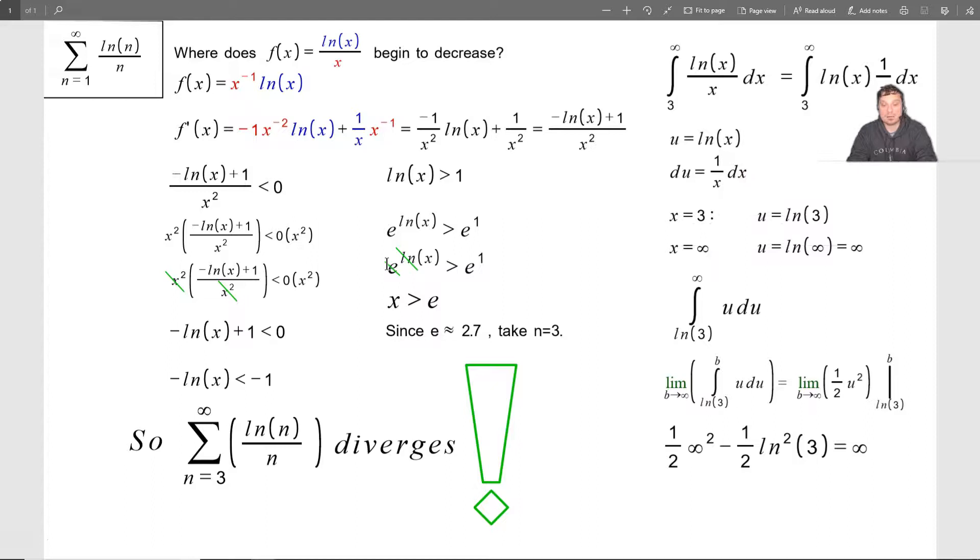And now I can replace 1 over x dx with du, ln of x with u. And it's going to give me the following, x equals positive 3 through u equals ln of 3. So what that is telling me is the lower limit of integration is going to be ln of 3. Now I'm switching it to u as the variable.